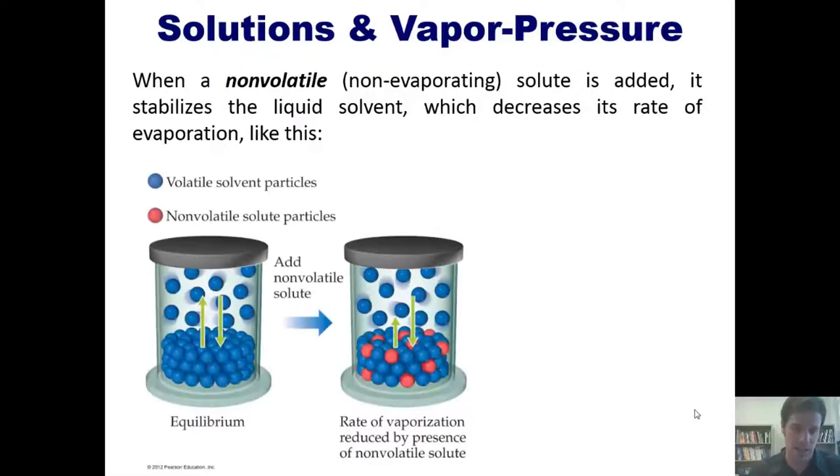Now, when a non-volatile, which is a non-evaporating solute, is added, it stabilizes the liquid solvent, which decreases its rate of evaporation. If I've got a volatile solvent that evaporates easily and I add a solute to it that is not volatile, it stabilizes or adheres the molecules of that solvent together, decreasing their rate of evaporation. I invite you to pause this and take a closer look at this figure right now.